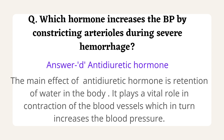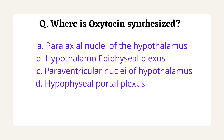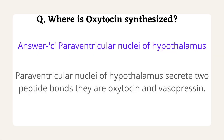The next question is: where is oxytocin synthesized? Options are paraaxial nuclei of the hypothalamus, hypothalamo-epiphysial plexus, paraventricular nuclei of hypothalamus, or hypophysial portal plexus. This question was asked in RRB Steno Exam 2019. The correct answer is option C, paraventricular nuclei of hypothalamus, because the paraventricular nuclei of the hypothalamus secretes two peptide hormones: oxytocin and vasopressin.